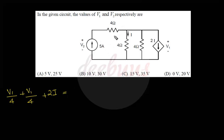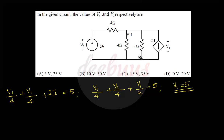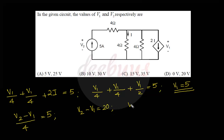Since i = V1/4, substituting: V1/4 + V1/4 + 2(V1/4) = 5, which gives V1/4 + V1/4 + V1/2 = 5, so V1 = 5 V. Now to find V2: from the figure, V2 is the voltage across the 5 A current source. The equation gives V2 − V1 = 20, so V2 = V1 + 20 = 5 + 20 = 25 V.